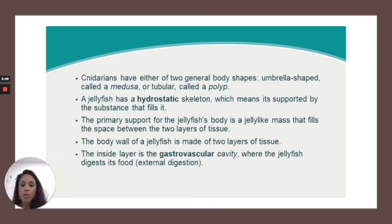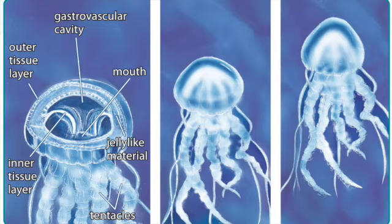The body wall of a jellyfish is made of two layers of tissue. The inside layer is the gastrovascular cavity, where the jellyfish digests its food. This is also known as external digestion.